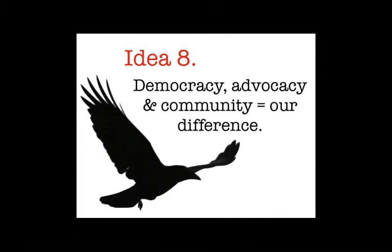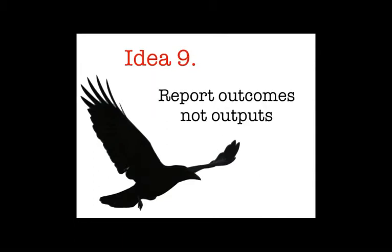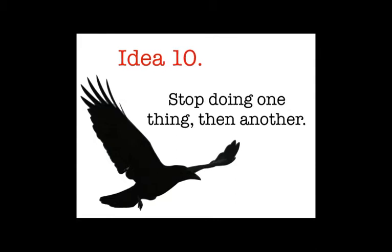Idea eight: democracy, advocacy and community are our point of difference — we need to push that. Idea nine: report outcomes, not outputs. This is from a paper at the IFLA conference looking at the value of libraries in the Netherlands. Outputs are things you can count like numbers of volumes or users. Outcomes are the so-what — what difference does it make? And the last idea: stop doing one thing, then stop doing another. When's the last time you looked at what your library did, and beyond deaccessioning videos and tape cassettes — actually looked and thought: things are changing, we need to stop doing some stuff to make room for a changing role.